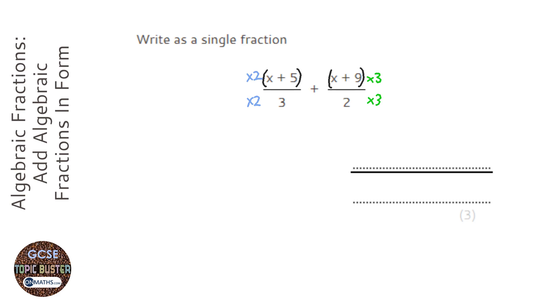Because on the left-hand side we're timesing it by 2, so it becomes 2 brackets x plus 5.